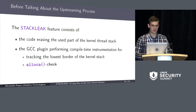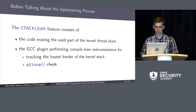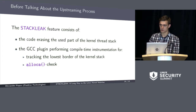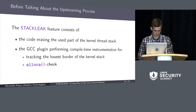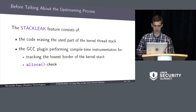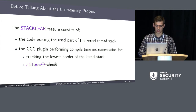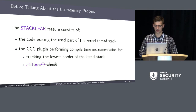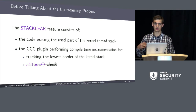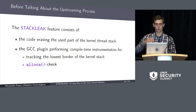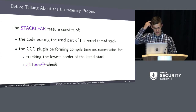Before speaking about the upstreaming process, I should say that StackLeak consists of two parts. First is the code which erases the used part of the kernel stack at the end of syscall. The second part is the GCC plugin, which is responsible for compile-time instrumentation. It is needed for two tasks: first, for tracking the lowest border of the kernel stack, because we erase only the used part; and second, it adds an alloca check which was hated by Linus and dropped.